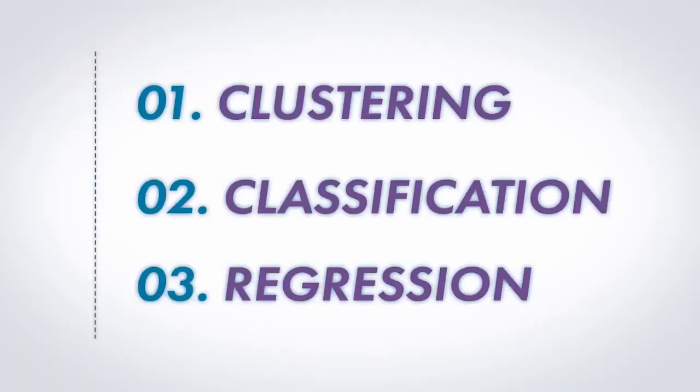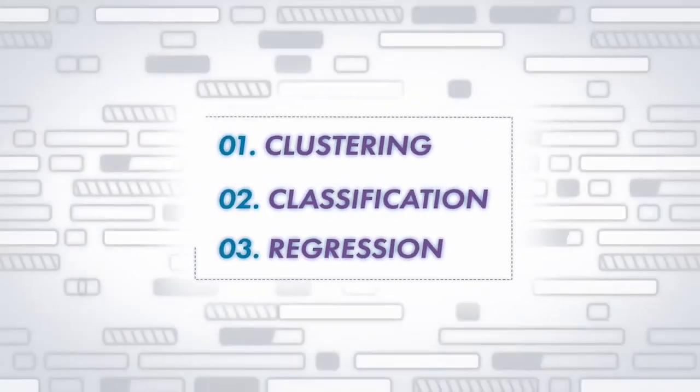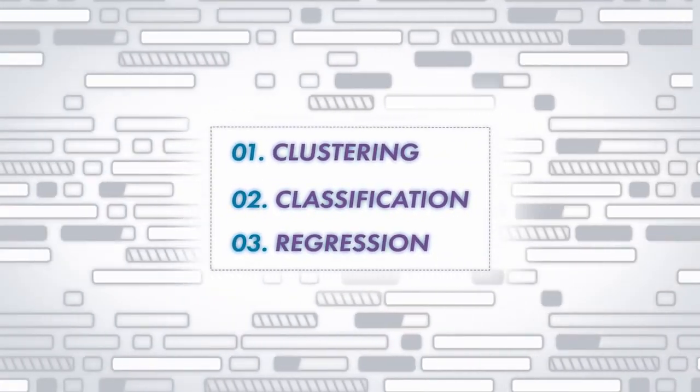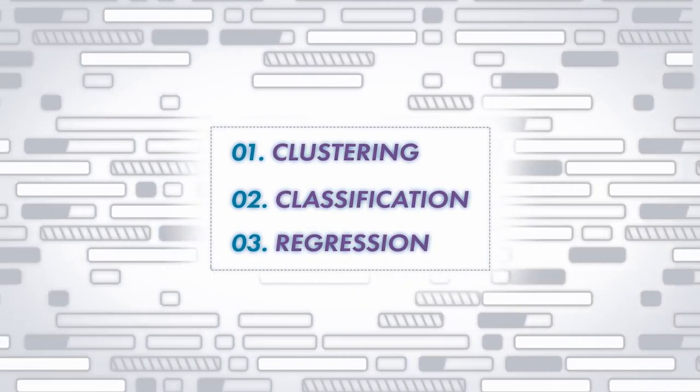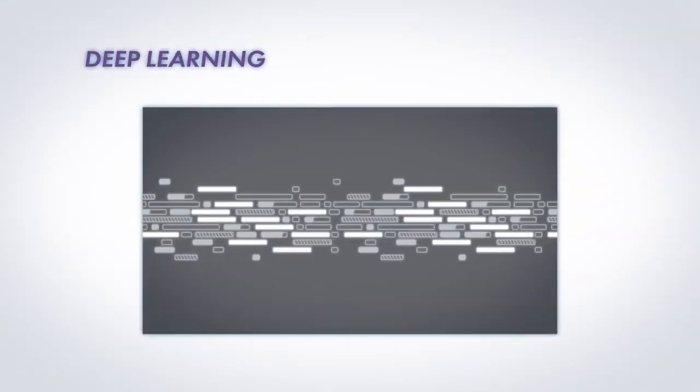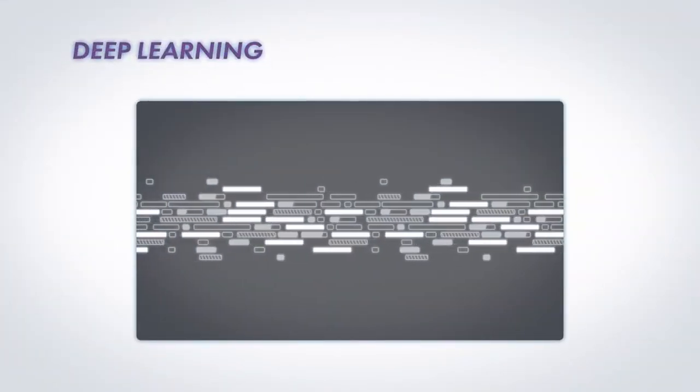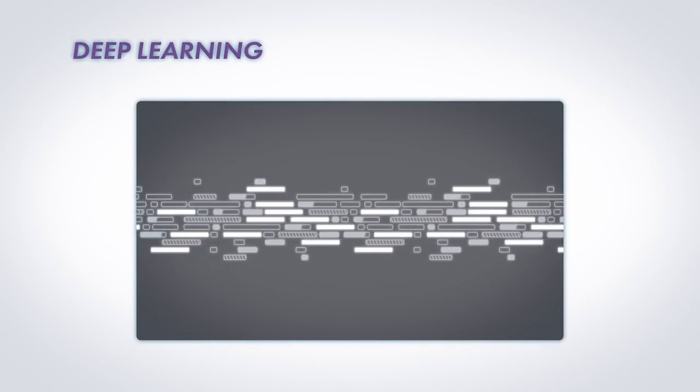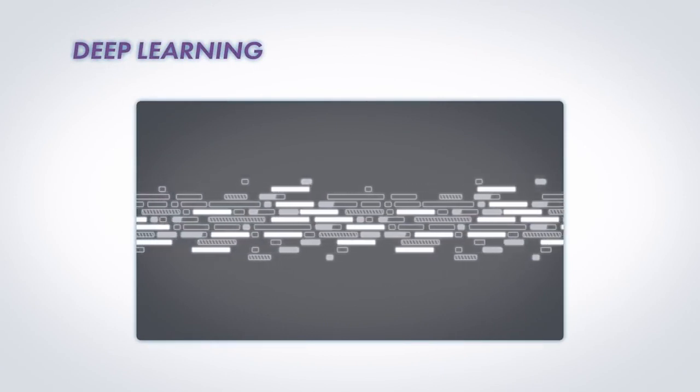So those are the three different kinds of machine learning. Machine learning is an incredibly complex topic, and I've just skimmed the surface here. You may have heard of deep learning, which is a type of machine learning where you don't manually select the features.